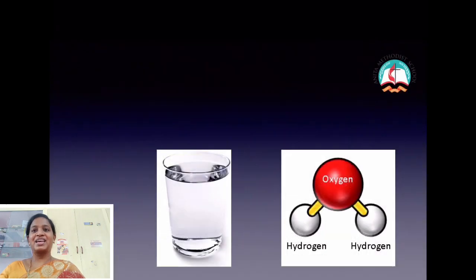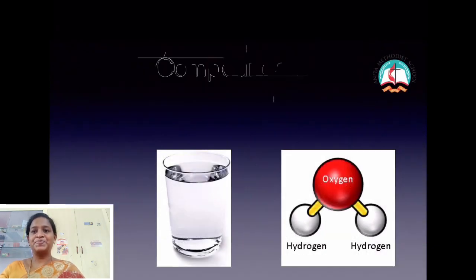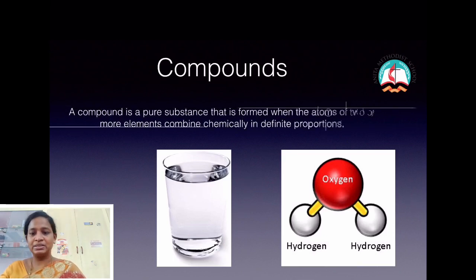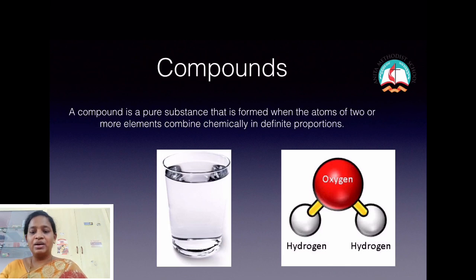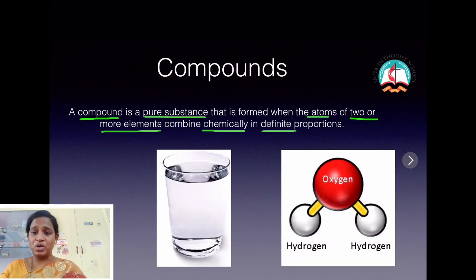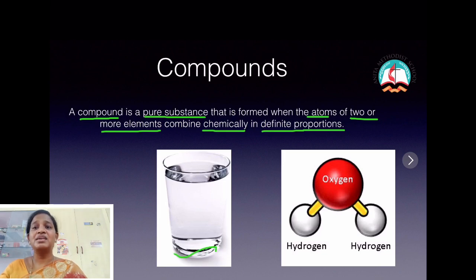What is a compound? A compound is a pure substance which is formed when atoms of two or more elements combine chemically in a definite proportion.